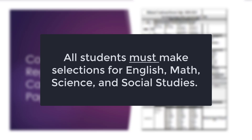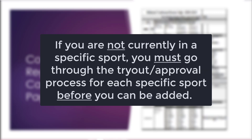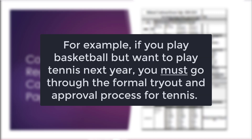All students must make selections for English, Math, Science, and Social Studies. If you are currently in an athletic sport, you may sign up for that sport for next year. If you are not currently in a specific sport, you must go through the tryout or approval process for that sport before you can be added. For example, if you play basketball but want to play tennis next year, you must go through the formal tryout and approval process for tennis.